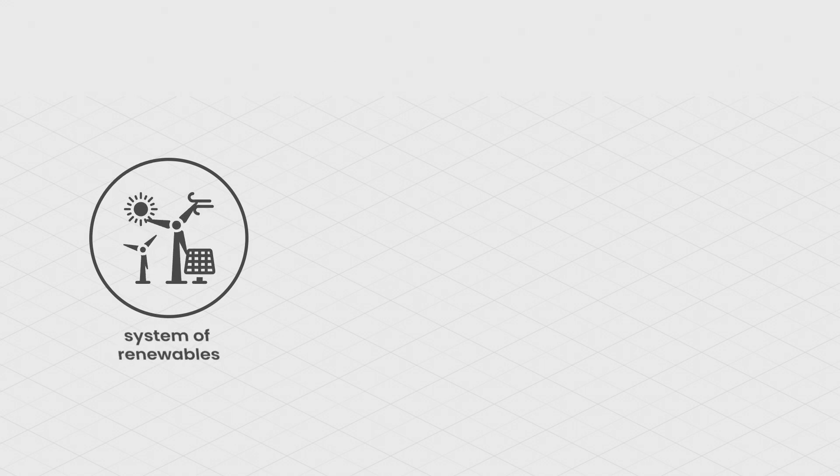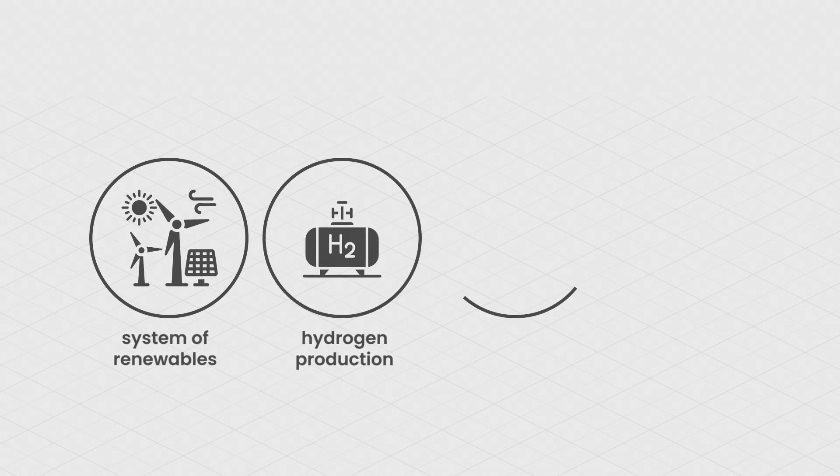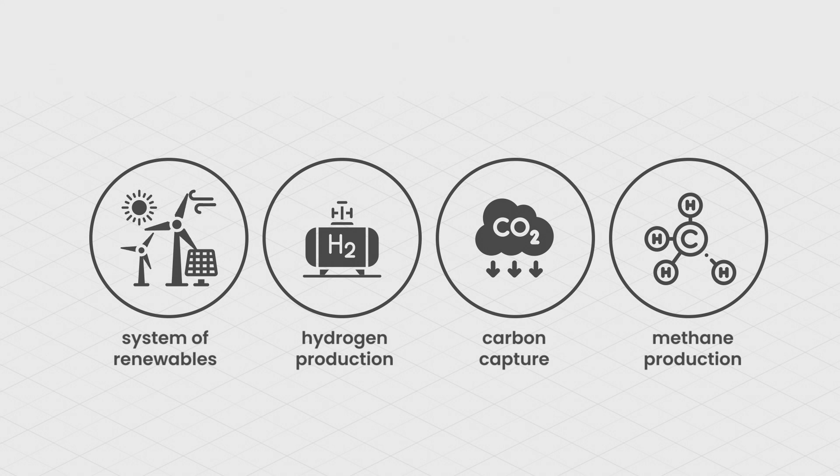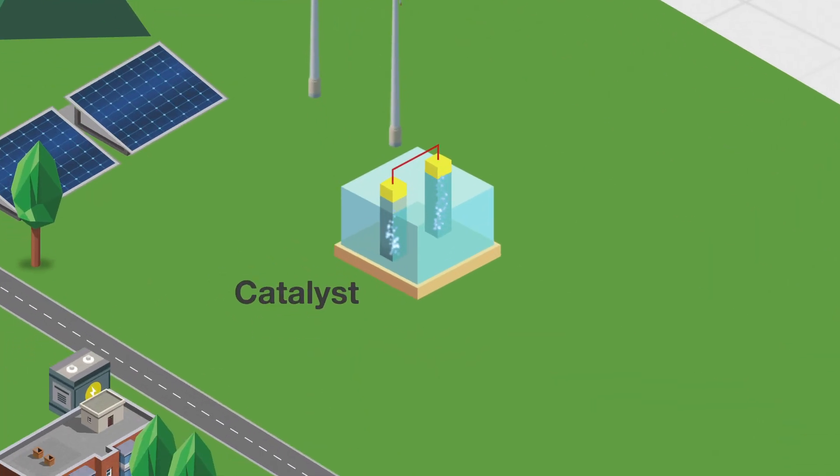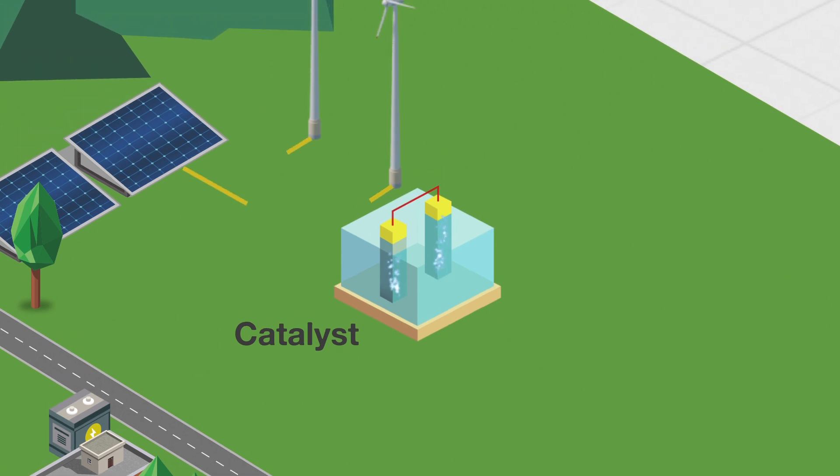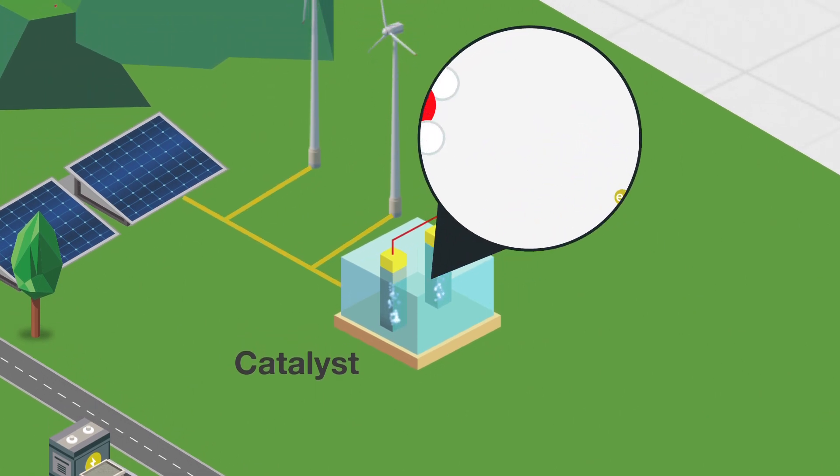It involves a system of renewables, hydrogen production, carbon capture, and methane production. By using the chemical process of electrolysis, green energy can be converted into hydrogen. What is electrolysis? In a nutshell, it's using catalysts to split water molecules into hydrogen and oxygen, and then storing the hydrogen molecules.